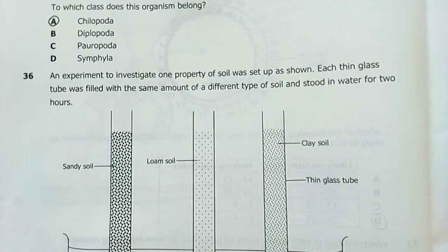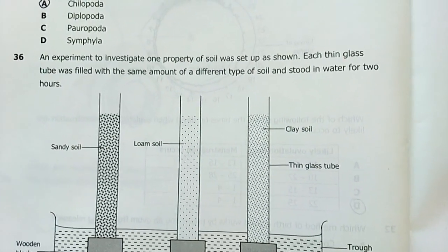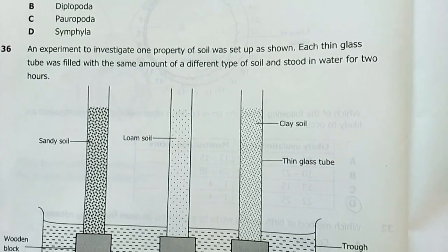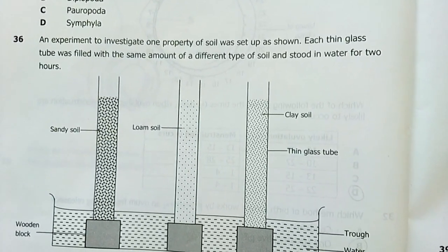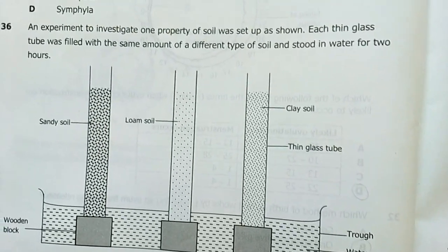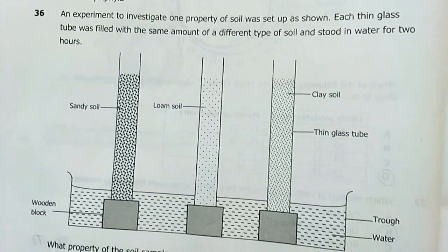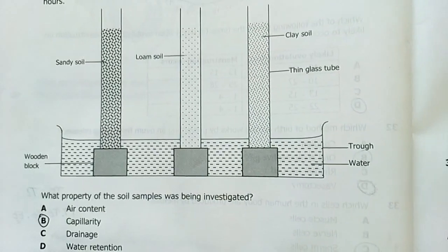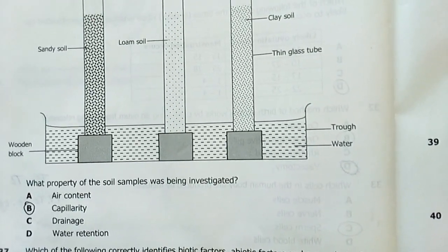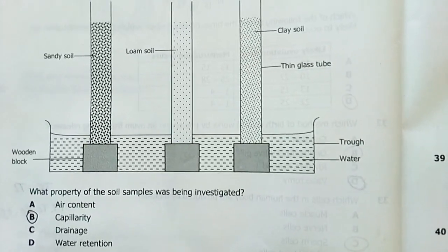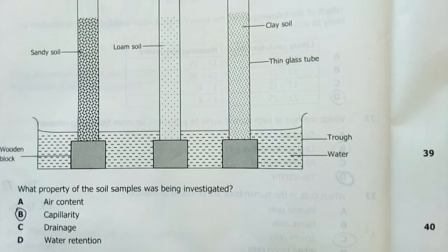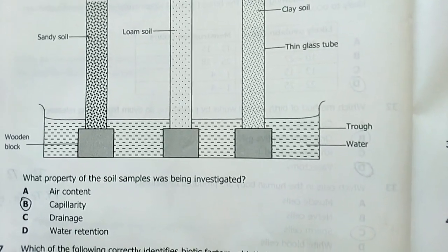Number 36. An experiment to investigate one property of soil was set up as shown. Each thin glass tube was filled with the same amount of different types of soil and stood in water for two hours. Standing in water. What property of soil samples was being investigated? My answer there is capillarity. The ability of water to climb up through narrow spaces. So, that's capillarity right there.